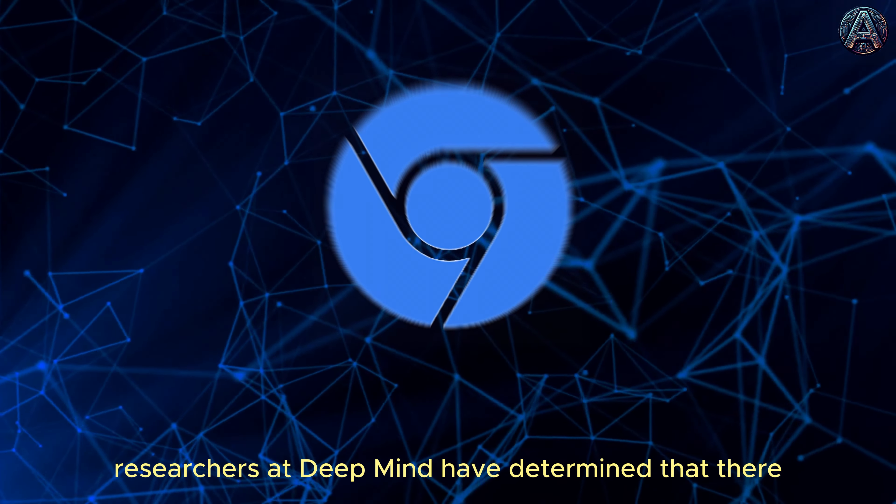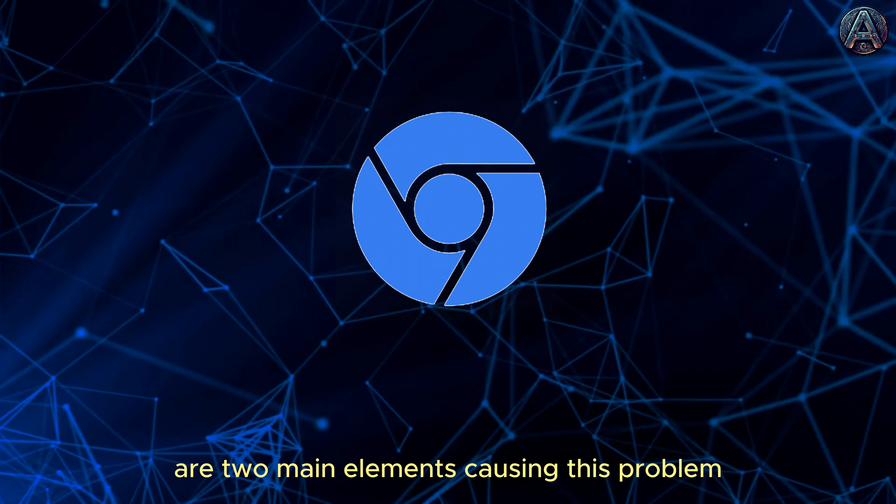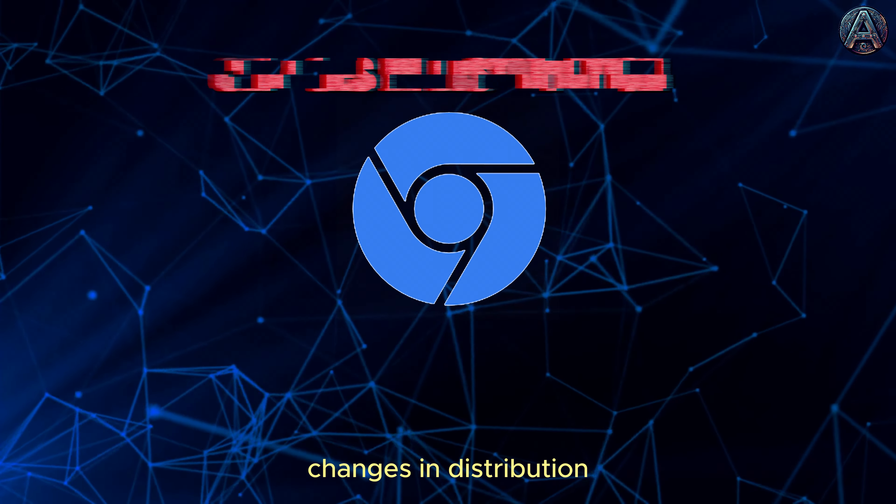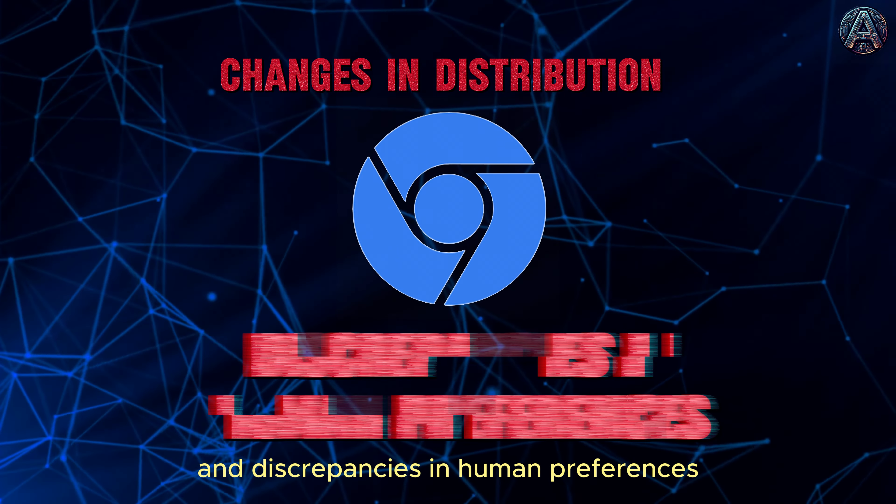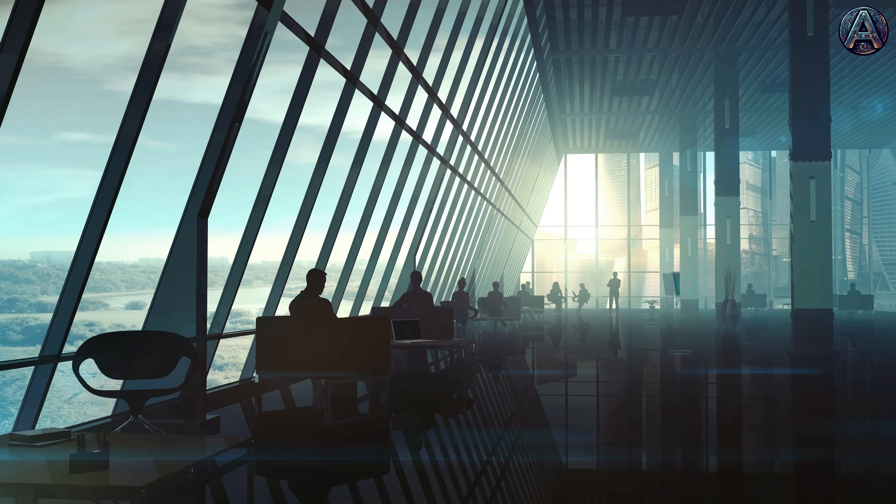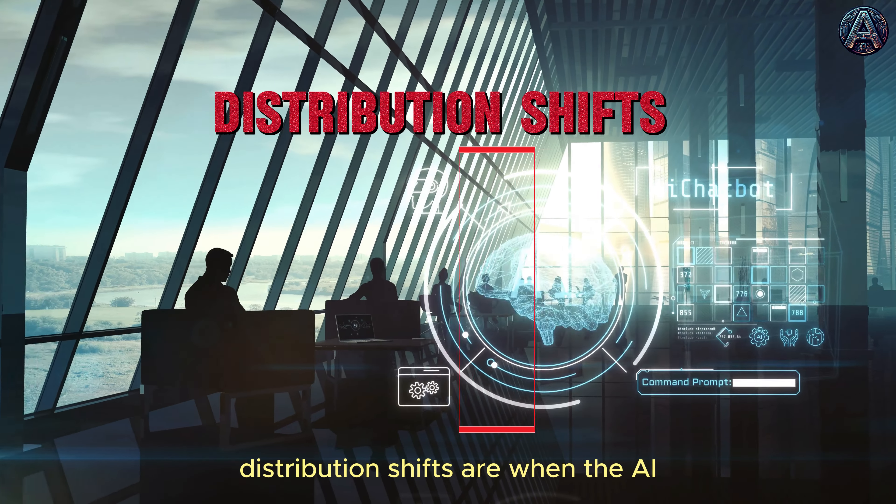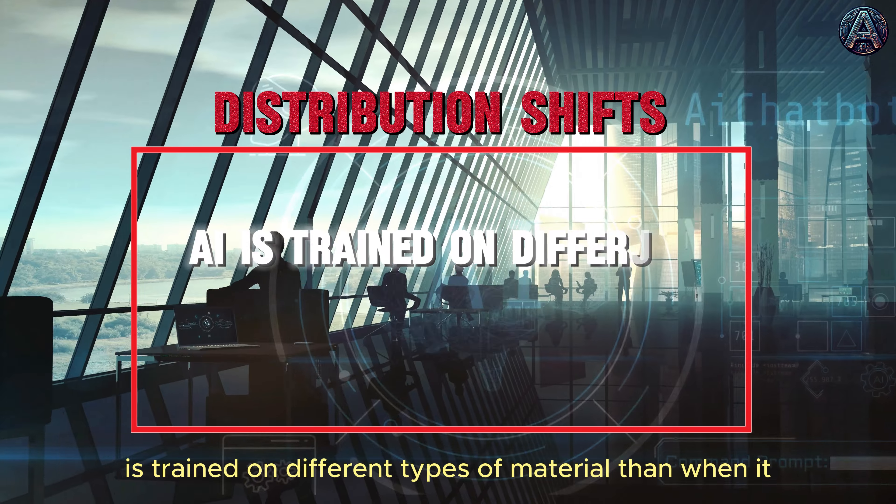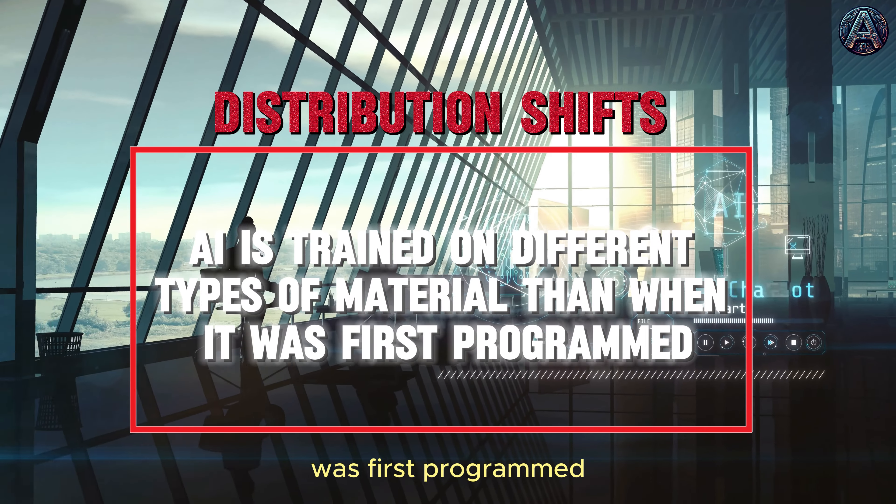To fight reward hacking, researchers at DeepMind have determined that there are two main elements causing this problem: changes in distribution and discrepancies in human preferences. Distribution shifts are when the AI is trained on different types of material than when it was first programmed.